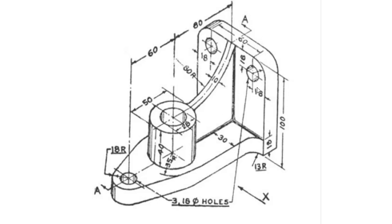The side part dimensions are: 60 plus 18 plus 18, giving a total of 96 distance horizontal, and 100 distance vertical. Create this rectangle with fillet radius of 18 on each corner, so the total fillet radius is 18. There are also three holes of 18 diameter each.